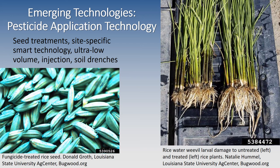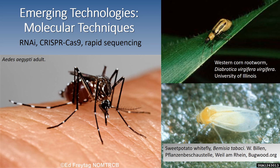We also have a lot of molecular techniques making tremendous strides — RNAi, CRISPR, rapid sequencing. All of these laboratory techniques are providing us with greater insight into what makes these pests tick, how they confer resistance into their populations, and giving us a new set of tools to combat various pests. Aedes aegypti is a major vector of Zika, and while Zika is not strictly a crop protection pest, these technologies could be used in pests of crop production systems. We're also seeing strides with molecular techniques to address western corn rootworm and sweet potato whitefly populations.